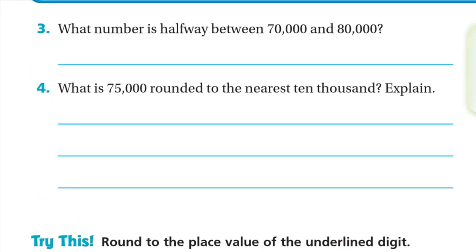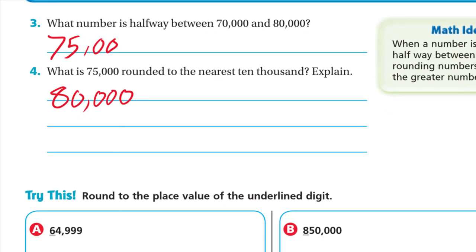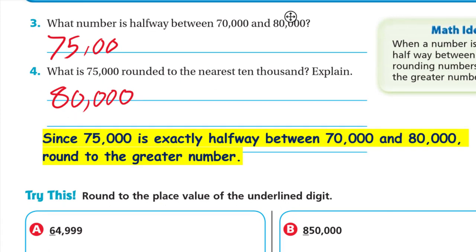What number is halfway between 70,000 and 80,000? In the middle it's 75,000. What is 75,000 rounded to the nearest ten thousand? It will be rounded to 80,000. Since 75,000 is exactly halfway between 70,000 and 80,000, we round it to the greater number. Any number from the halfway point and above rounds to the greater number; less than the halfway we round to the smaller number.